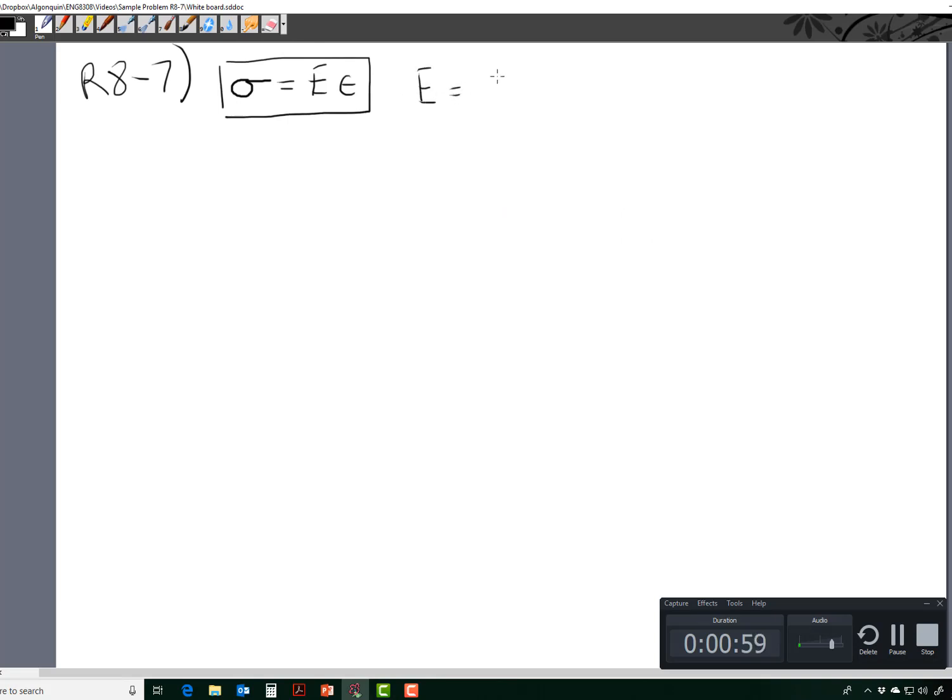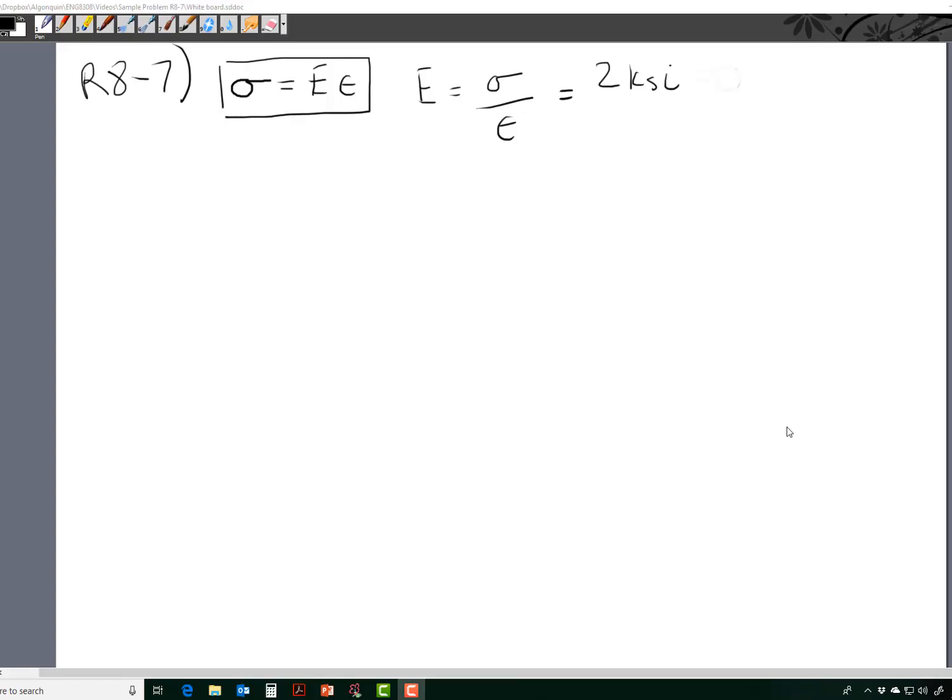So E is equal to sigma over epsilon, which is the strain. That's 2 KSI minus 0 over 0.004 subtract 0. Young's modulus is equal to sigma over epsilon, so that's 2 KSI minus 0 over 0.004 minus 0, and so this equals 2 over 0.004, which is equal to 0.5 times 10 to the third KSI, which is the Young's modulus for this polyethylene sample.